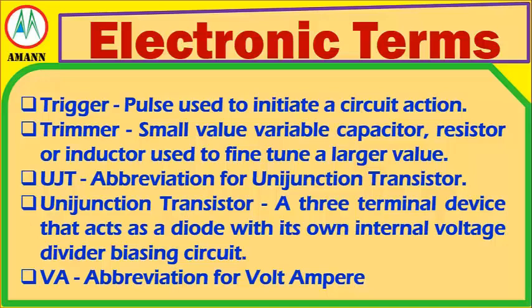UJT: An abbreviation for unijunction transistor. Unijunction Transistor: A three-terminal device that acts as a diode with its own internal voltage divider biasing circuit.